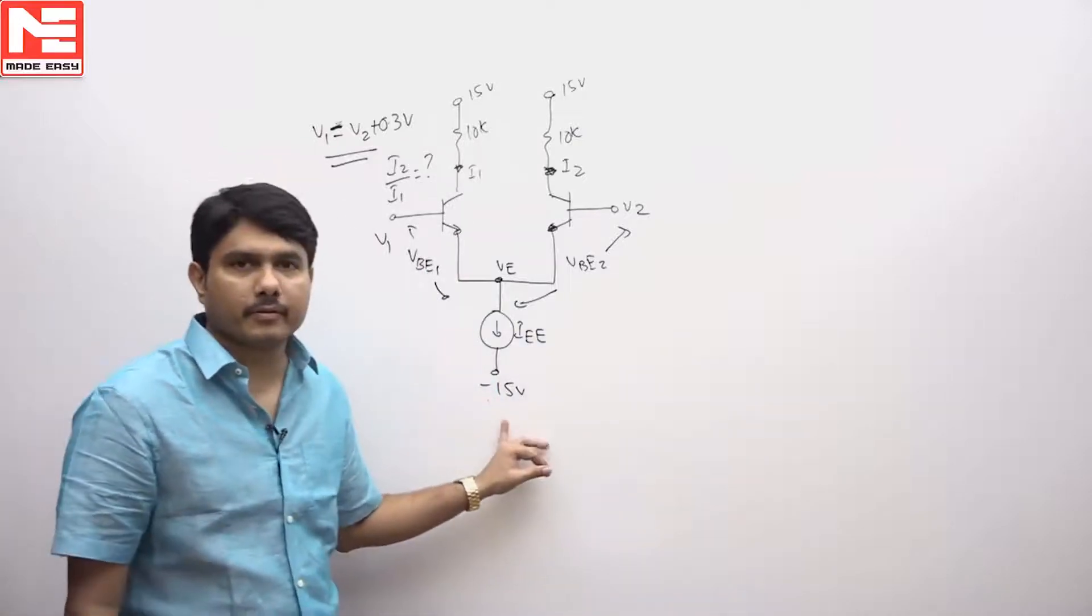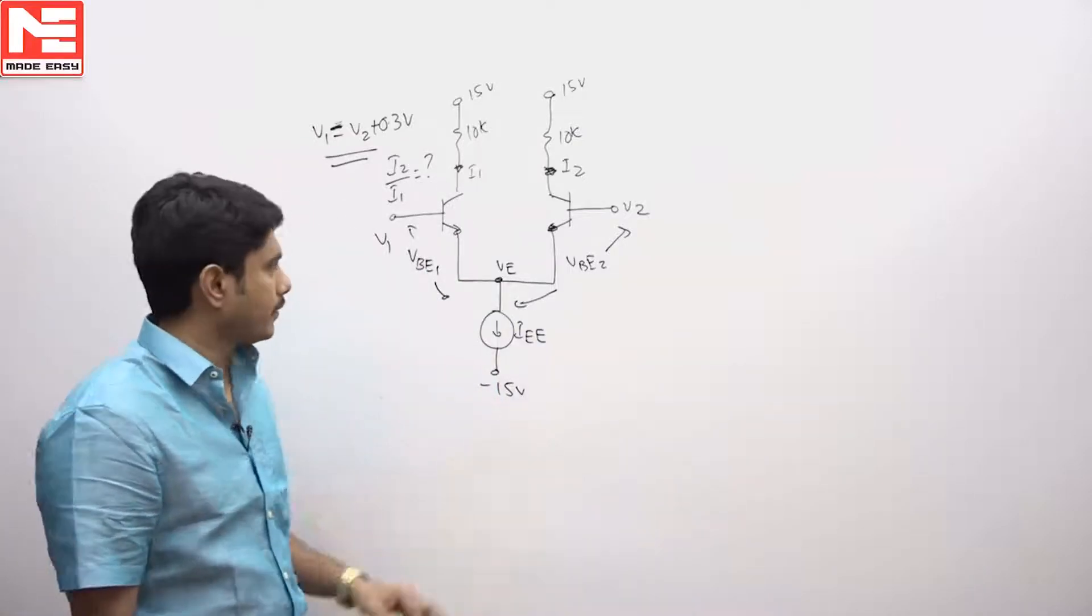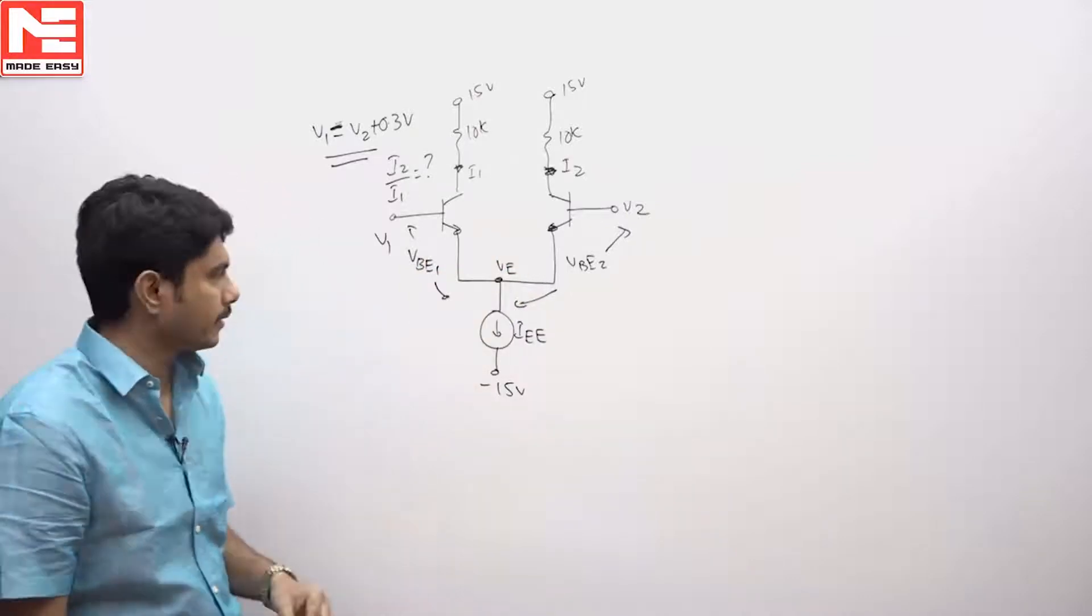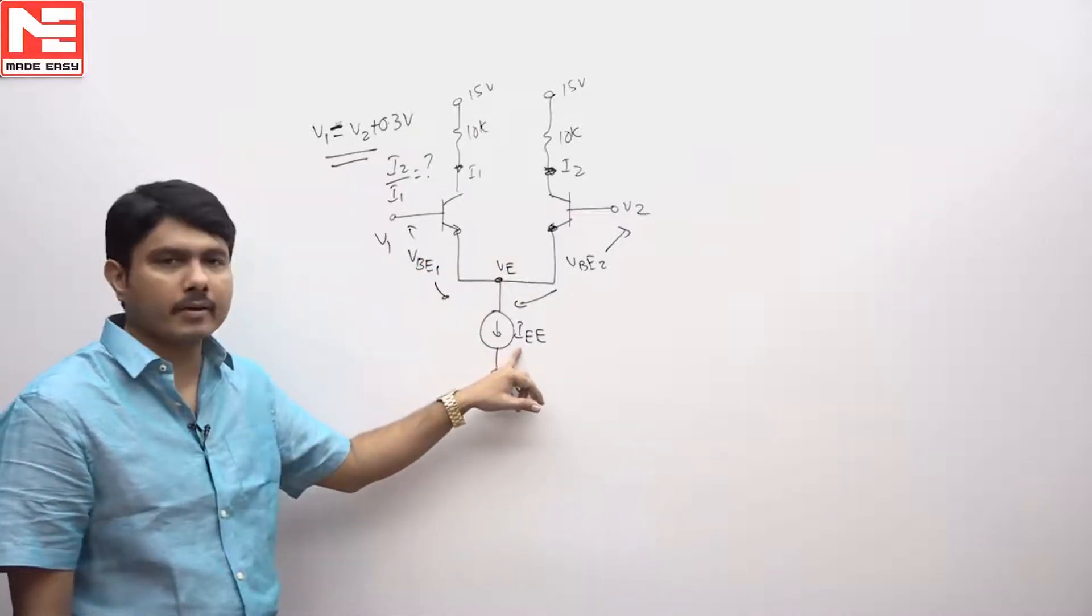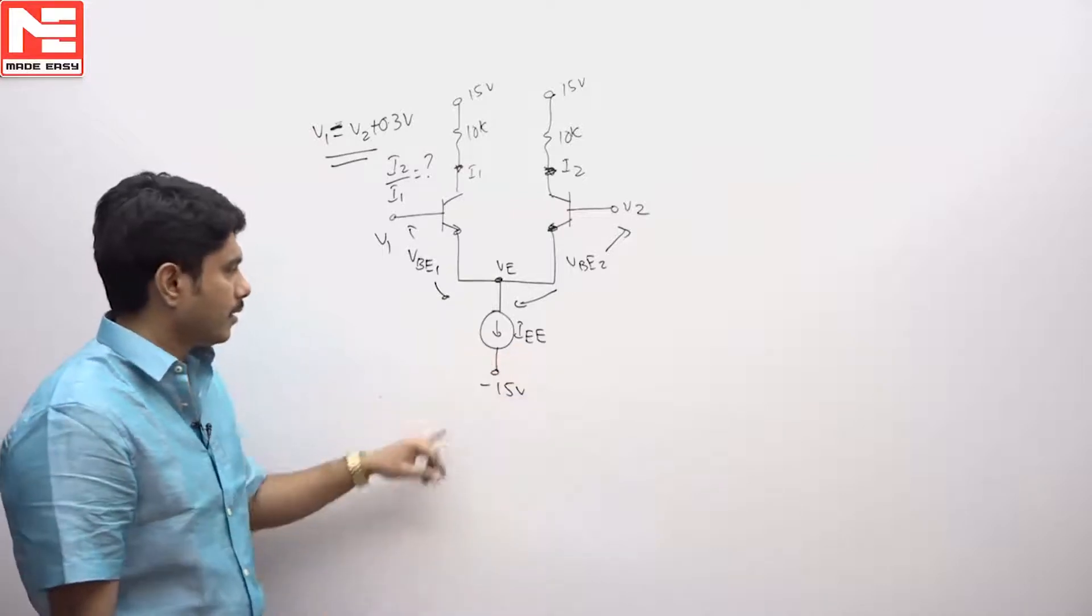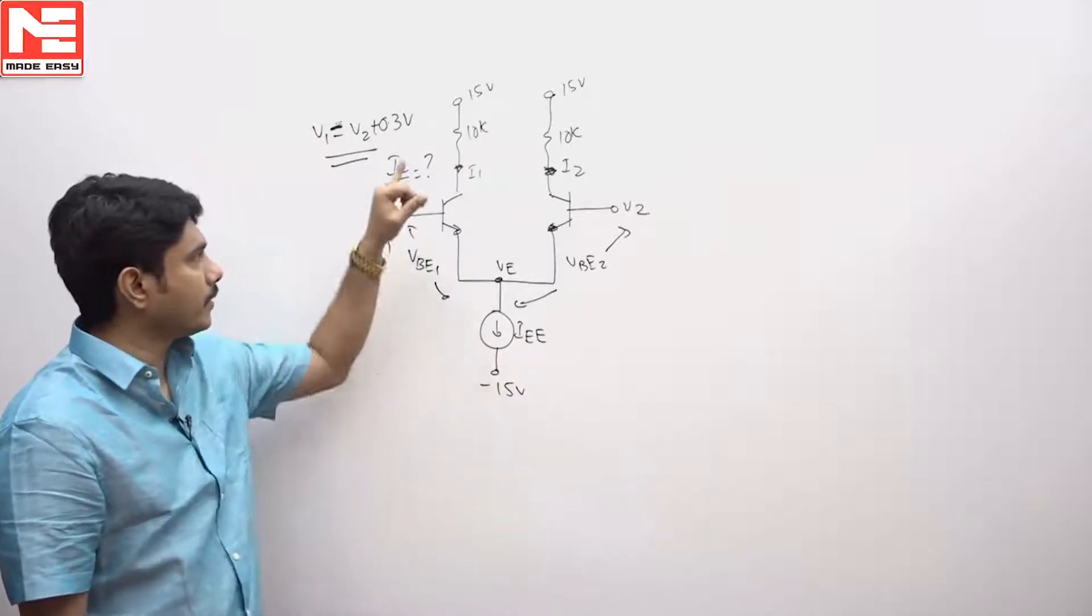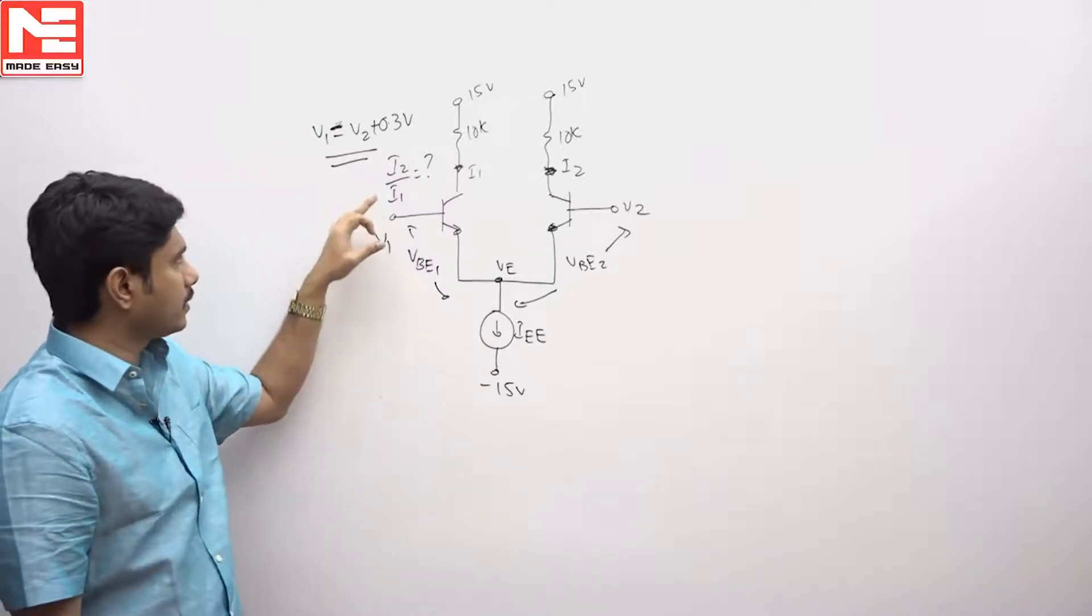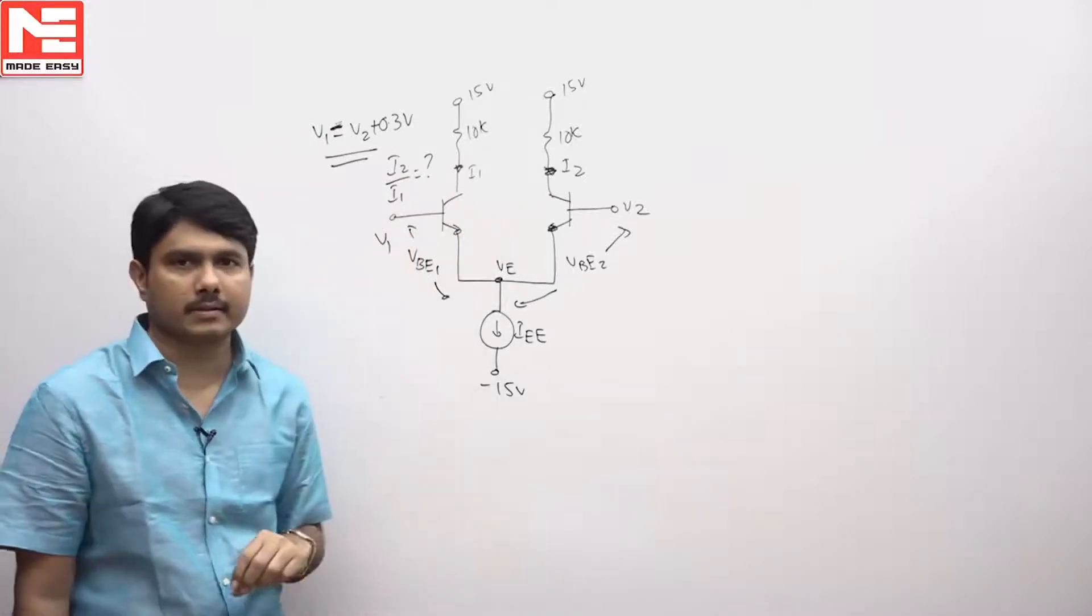The question is related to a differential amplifier. If you see these two transistors, they are identical transistors with an operating current called IAE. This has a minus 15 volts battery, 15 volts dual battery design. He is asking what is I2 by I1.